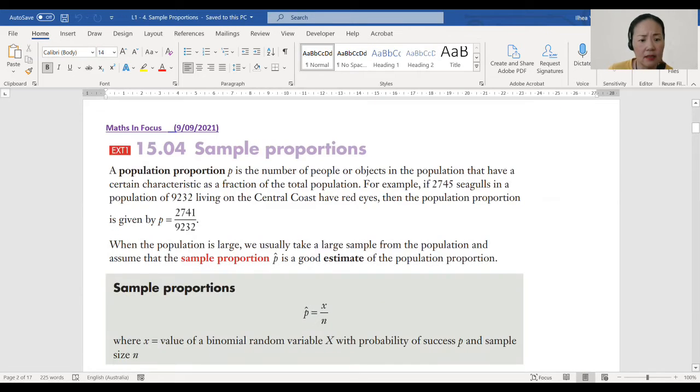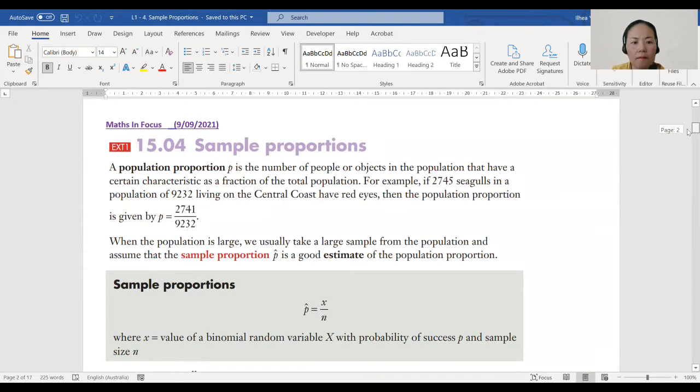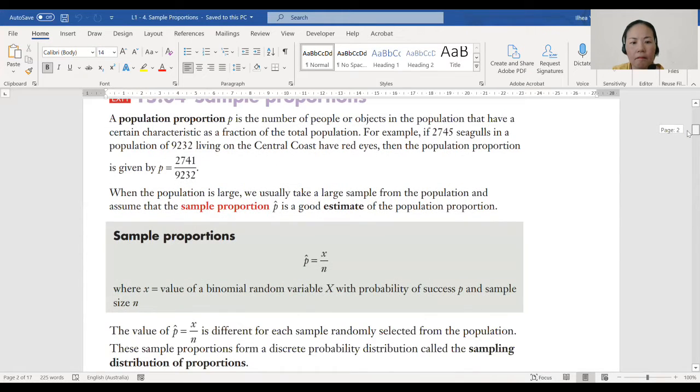Today's lesson is sample proportions. Kiko, can you read the information for us? A population proportion p is the number of people or objects in the population that have a certain characteristic as a fraction of the total population. For example, if 2,745 seagulls in a population of 9,232 living on the central coast have red eyes, then the population proportion is given by p equals 2,745 over 9,232.